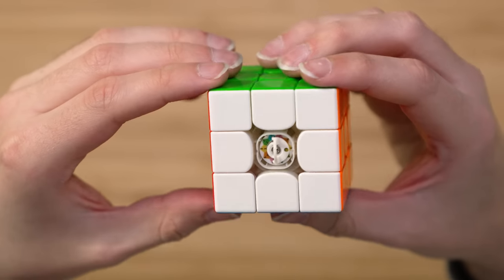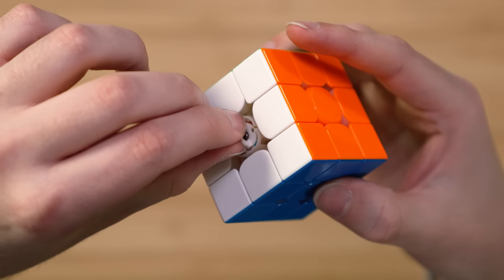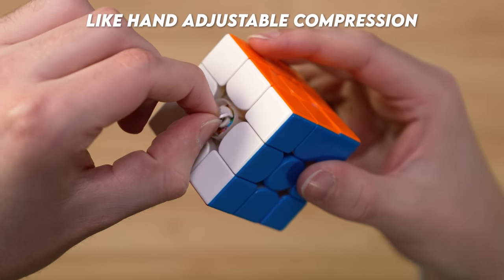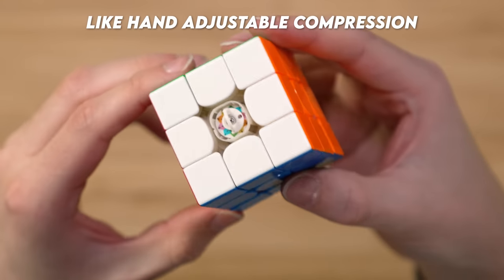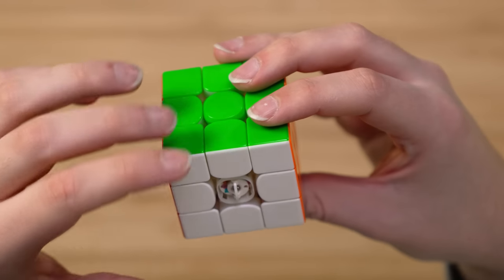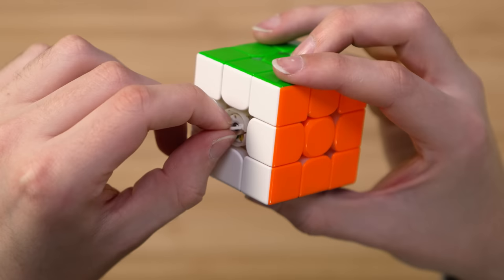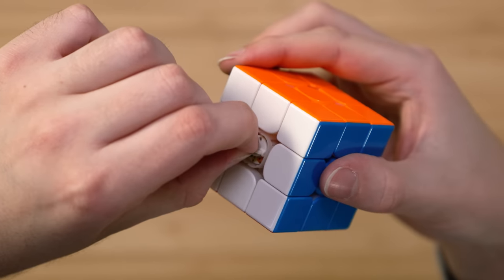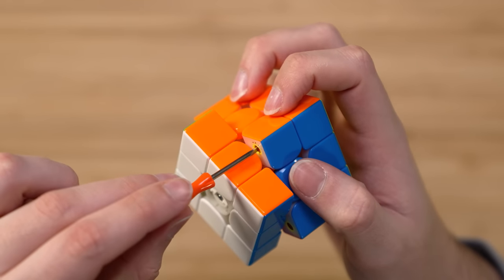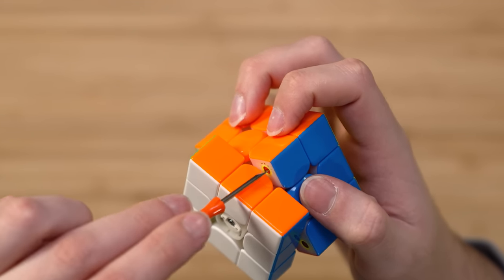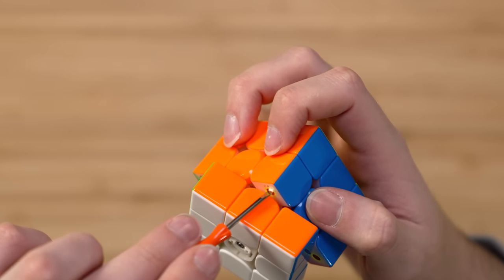And last, the Tornado V3 obviously has a ton of adjustment features that the YS3 lacks. So if you're looking for a cube that you can fully adjust, then the Tornado V3 might be a better option because you can actually do that. The YS3 lets you control everything except the magnet strength. So if you don't like a moderate to strong magnet setting, you might want to avoid this cube.